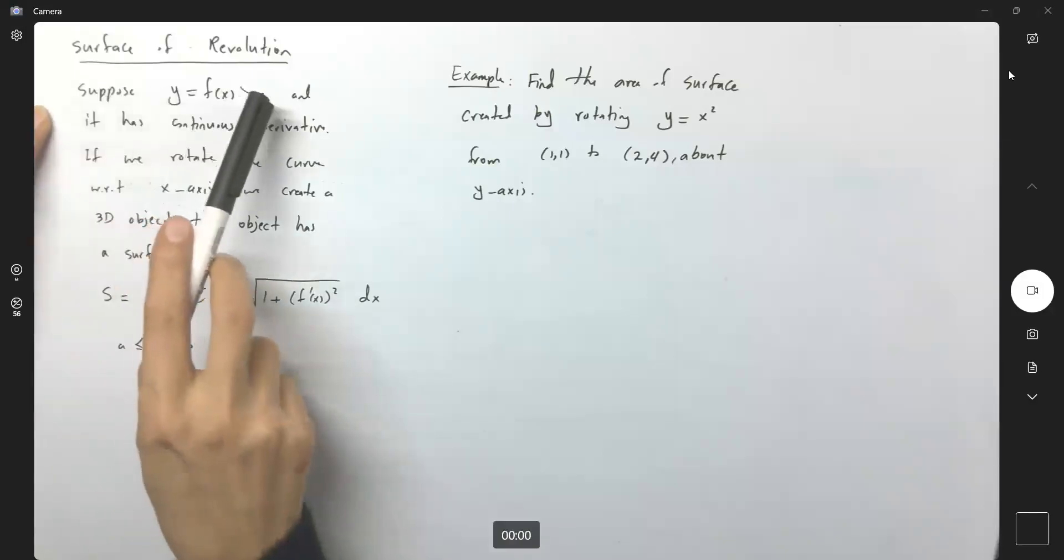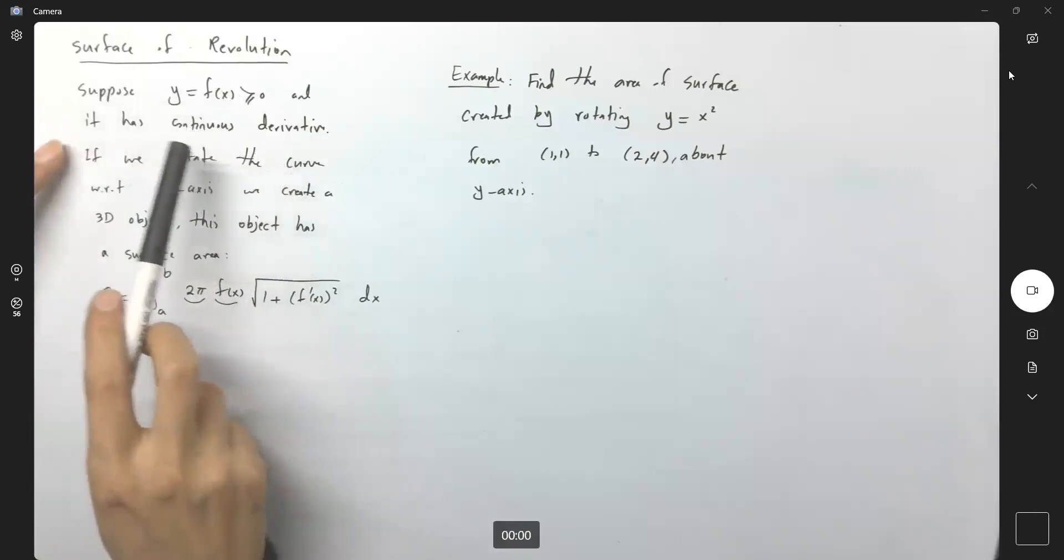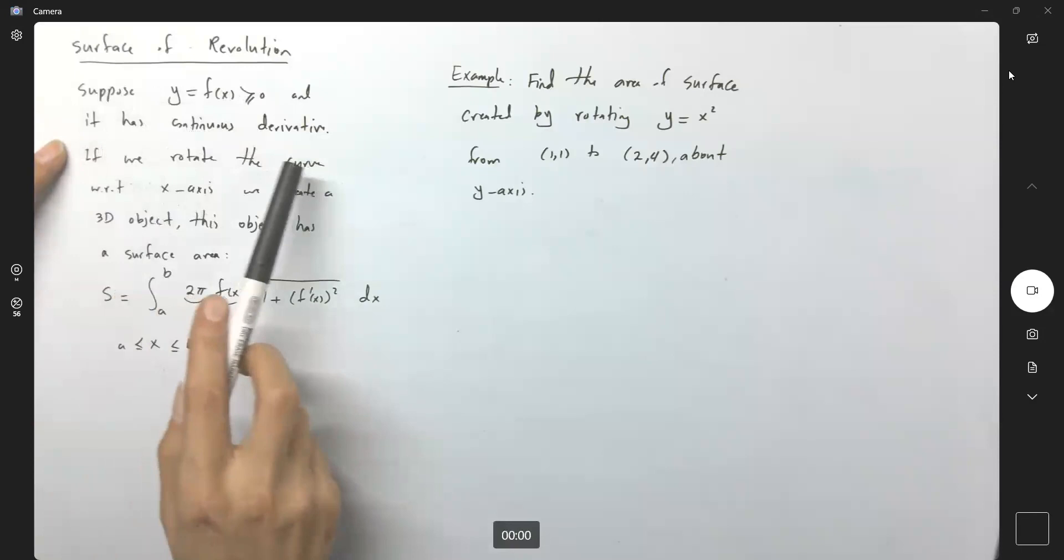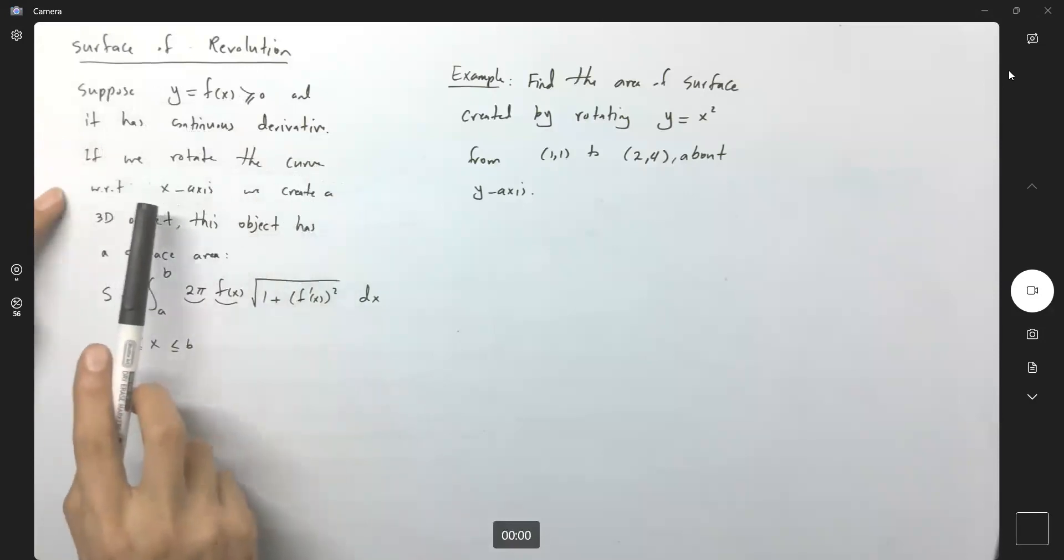Remember that when we introduced the surface of revolution, we said that suppose you have a positive function that has continuous derivative and we are rotating this about x-axis, and this is the formula when we have the rotation about x-axis.